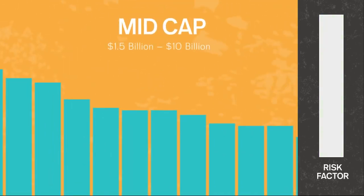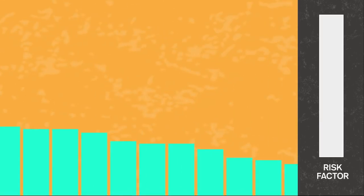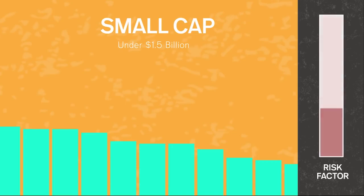Mid cap stocks include roughly the next 400 companies by size. Smaller, but still fairly well established. They're considered riskier than large cap. Following large cap and mid cap, take the next 2,000 companies and you've got small cap stock. While they have potential for greater growth, they also have the greatest risk.